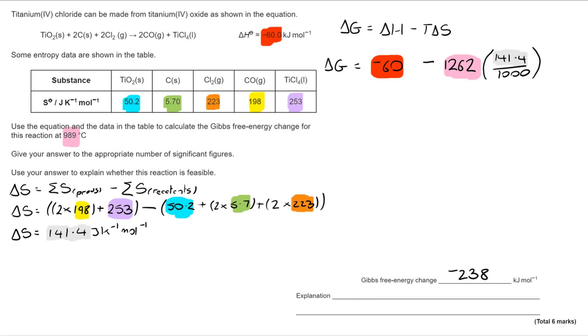Now once I've got that I get my delta G value which is negative 238.